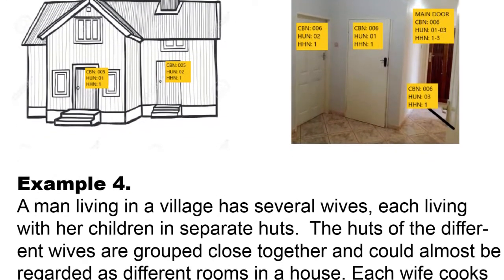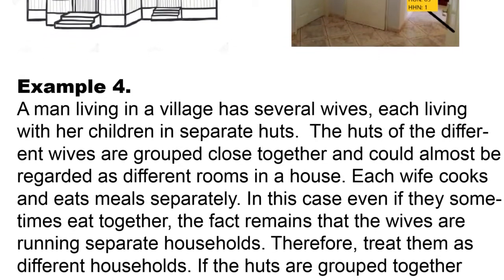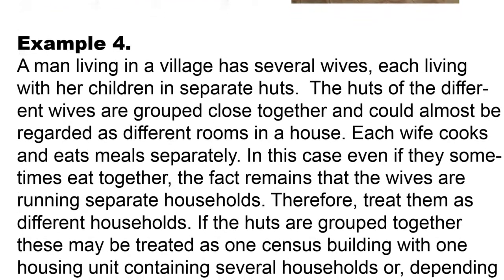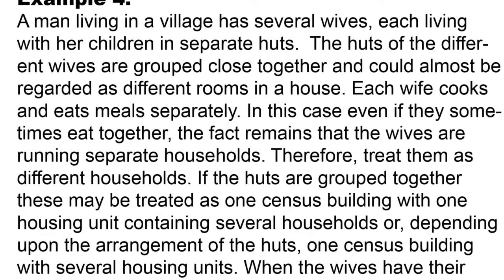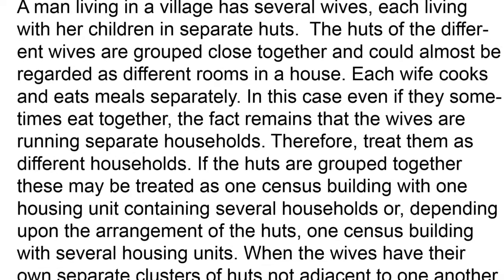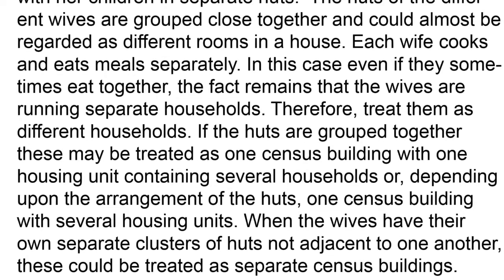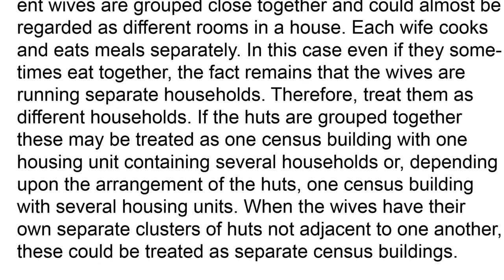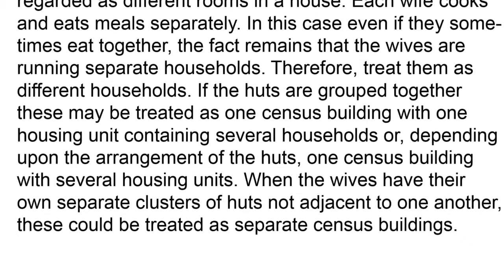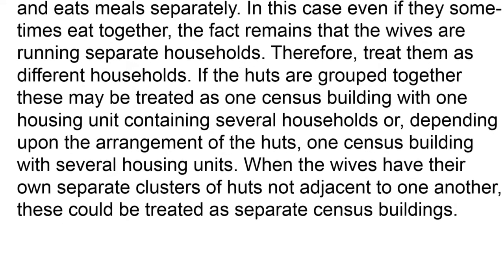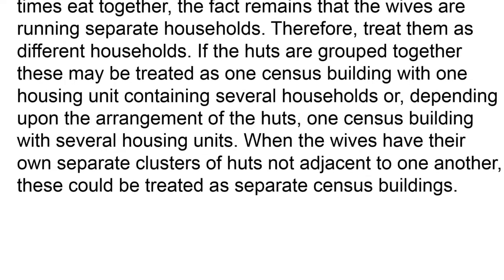Example 4: A man living in a village has several wives, each living with her children in separate huts. 4a: The huts of the different wives are grouped close together and could almost be regarded as different rooms in a house. Each wife cooks and eats separately. Even if they sometimes eat together, the wives are running separate households and should be treated as different households. If the huts are grouped together, they may be treated as one census building with one housing unit containing several households, or depending on arrangement, one census building with several housing units. When the wives have their own separate clusters of huts not adjacent to one another, these could be treated as separate census buildings.